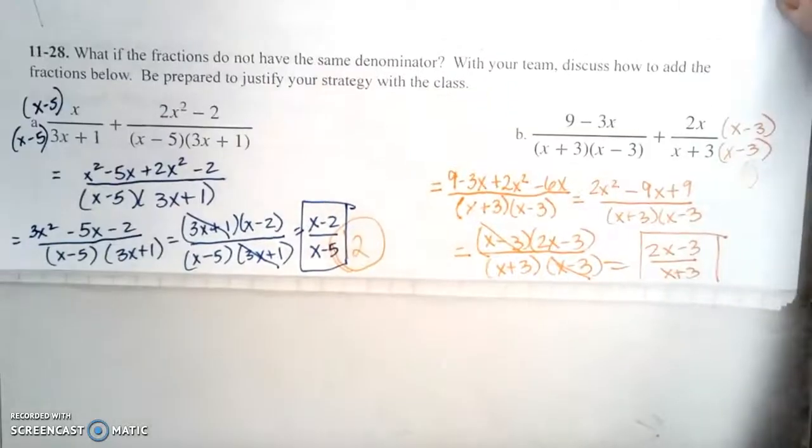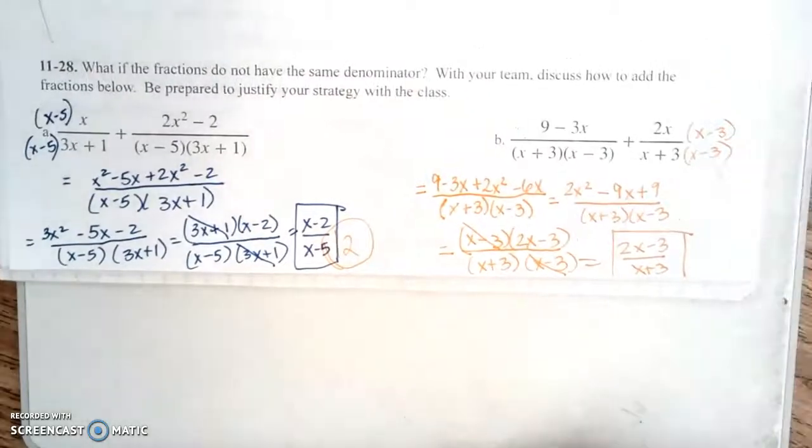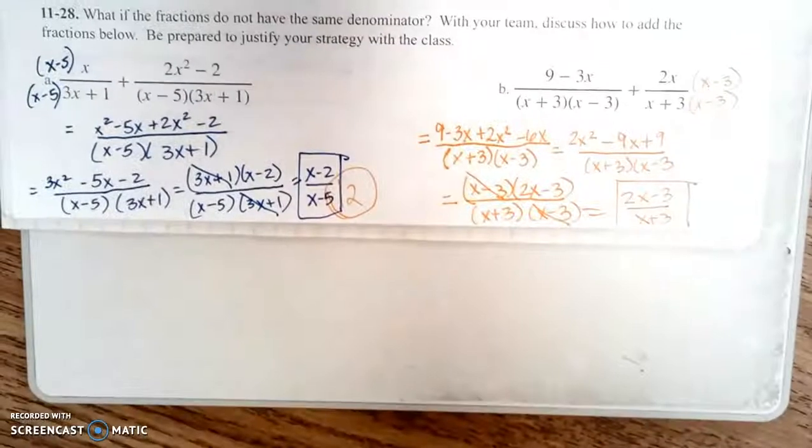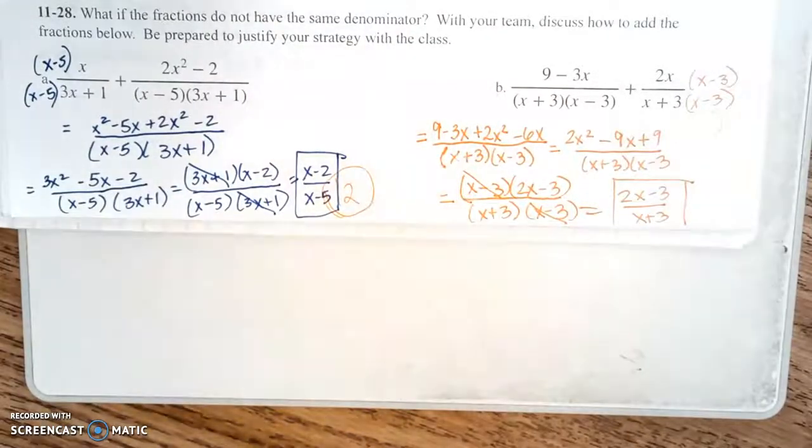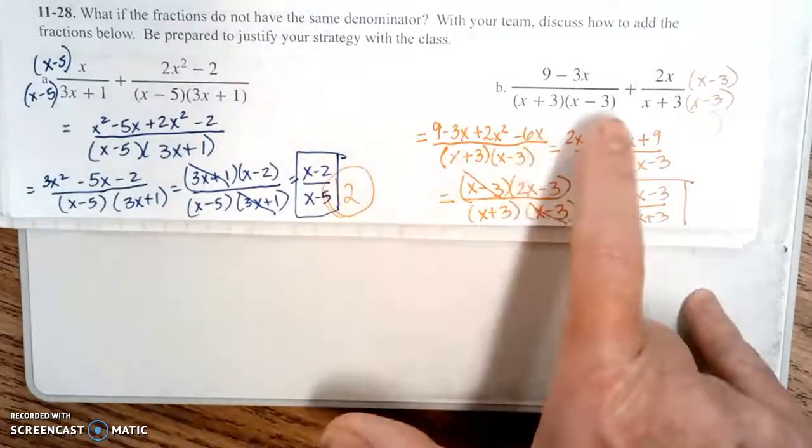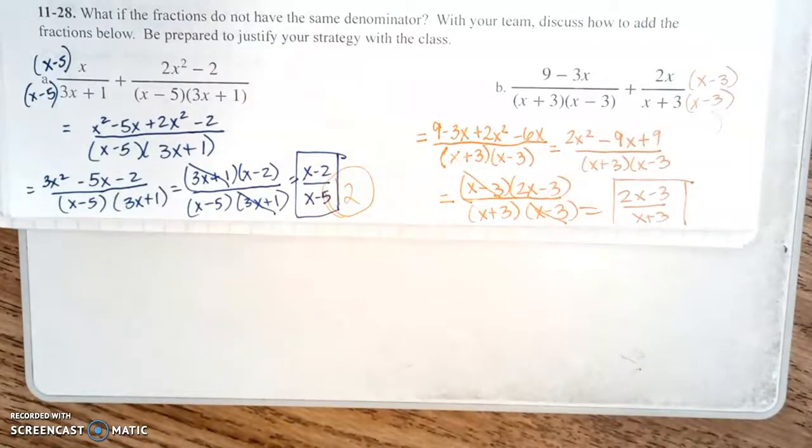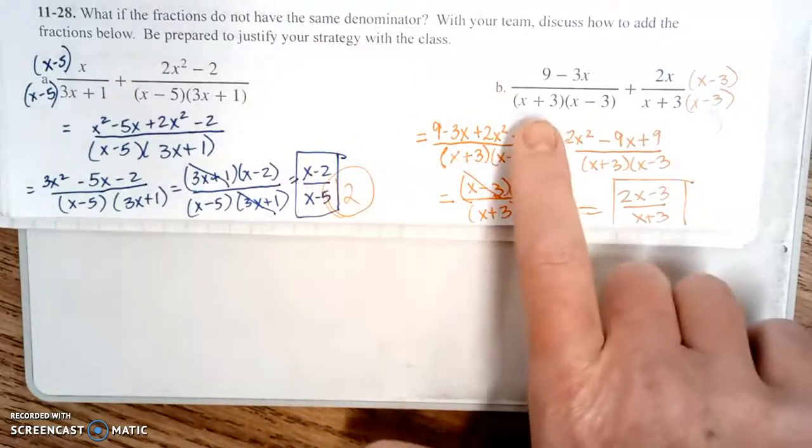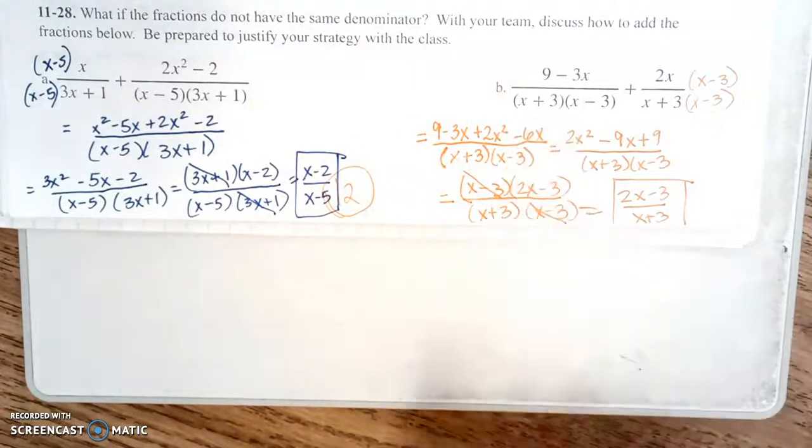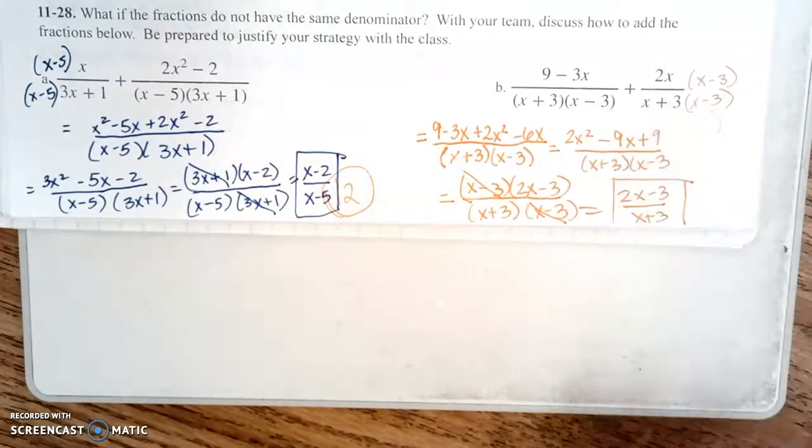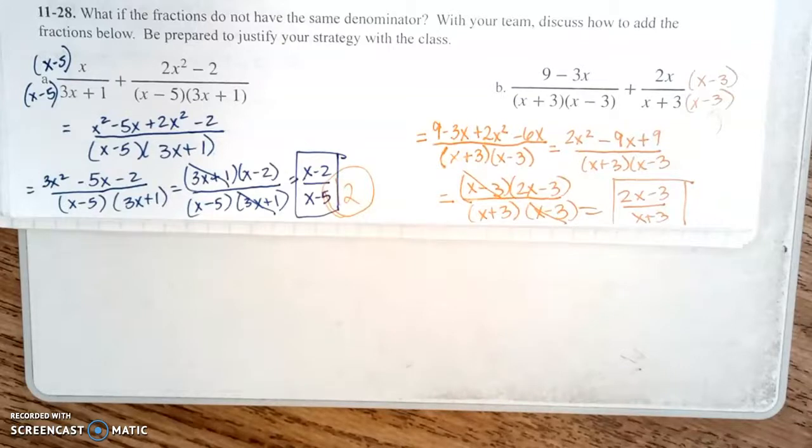Let's look at part b. Again, the denominator is already factored. You will at some point run into some that are already factored and some that you will need to factor first. So if the denominator on the first expression is x plus 3 and x minus 3, and then the denominator on the second one is only the x plus 3, we need to multiply it by the x minus 3 over the x minus 3.